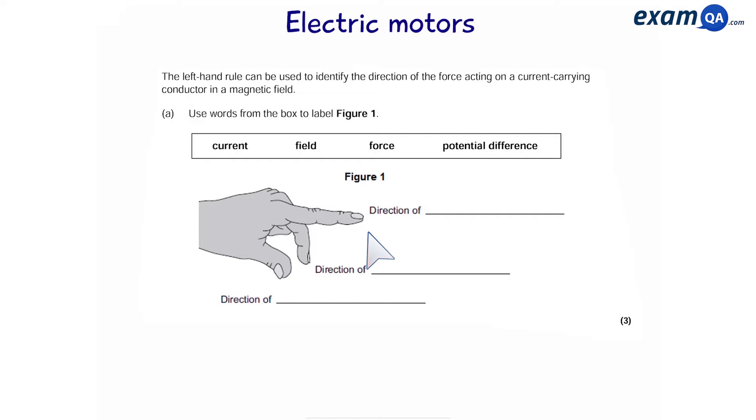In this question, we have a diagram of the left hand and we have to label what each finger represents. Starting with the top, the first finger represents the direction of the magnetic field, pointing from north to south.